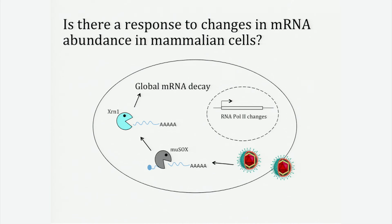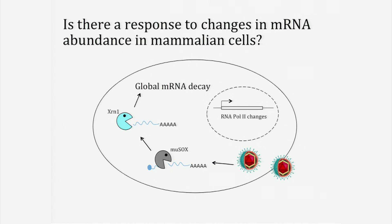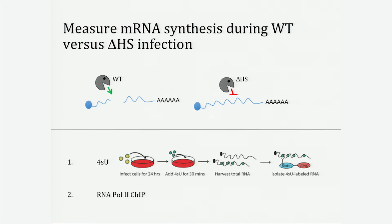We wondered: could we be in a unique position to address whether something like this exists in mammalian cells, using our system of host shutoff? Here we would use gamma herpesvirus host shutoff, look for mRNA degradation, and then look for changes to mRNA transcription. One critical control is a point mutant in our murine gamma herpesvirus MHV68, which renders it defective for host shutoff — delta HS — so we can compare transcription in a delta HS infection to a wild-type infection where mRNA degradation is occurring. We measure mRNA transcription through a couple of different methods.